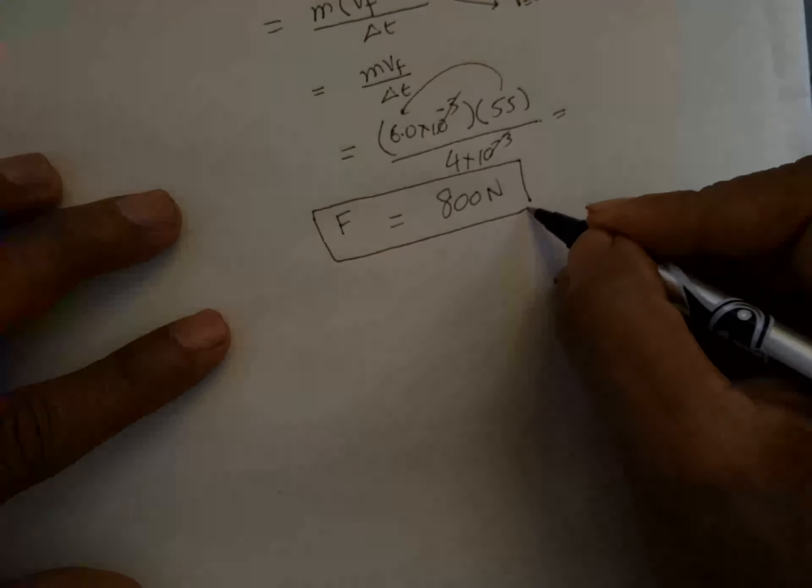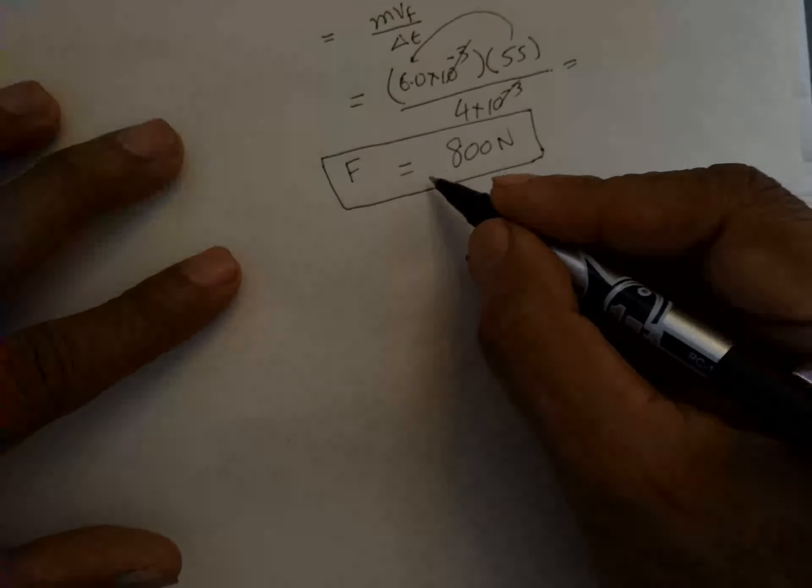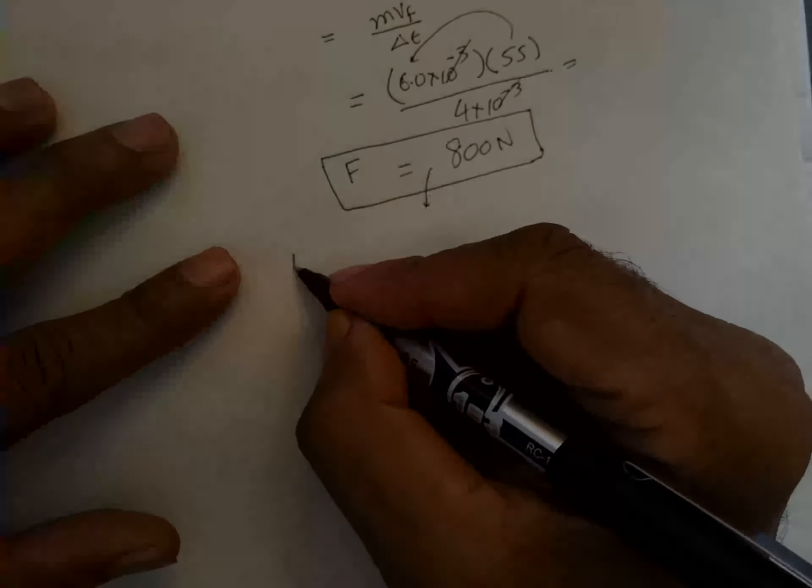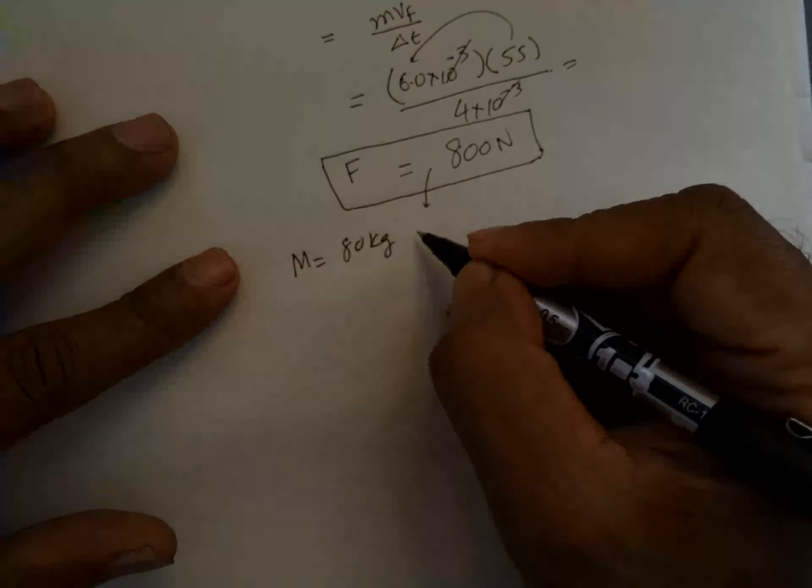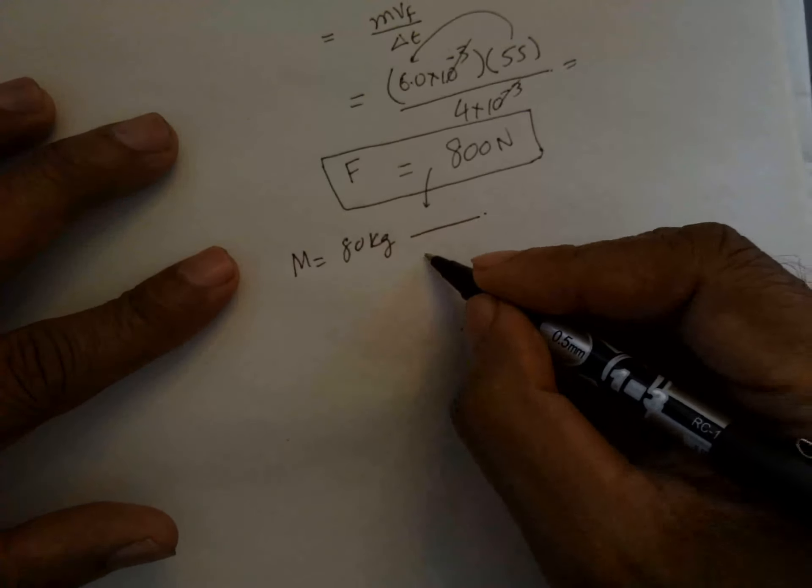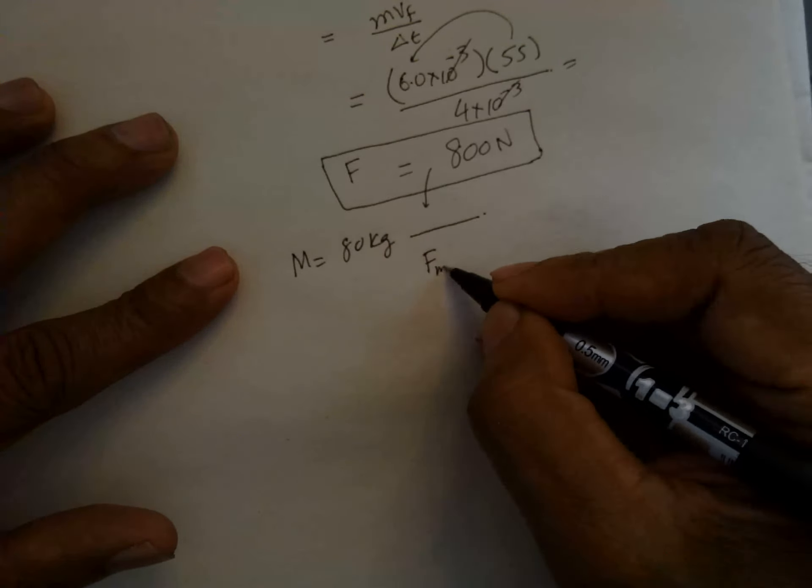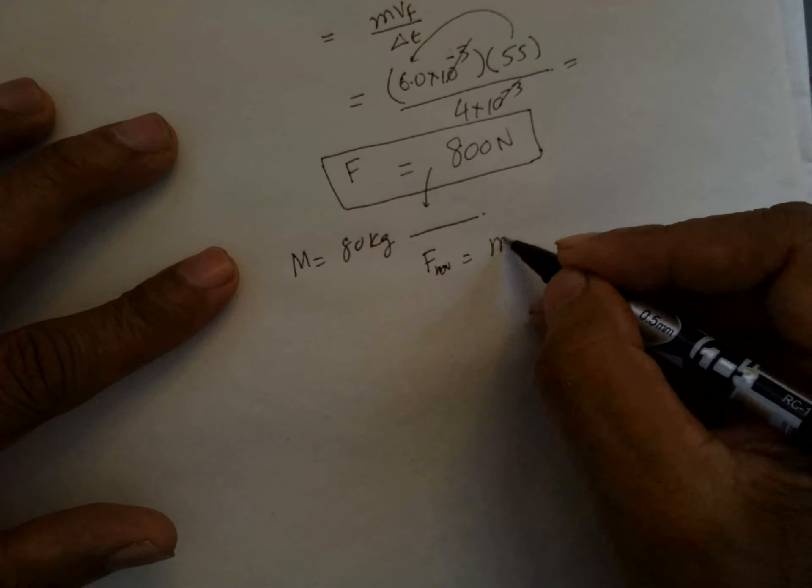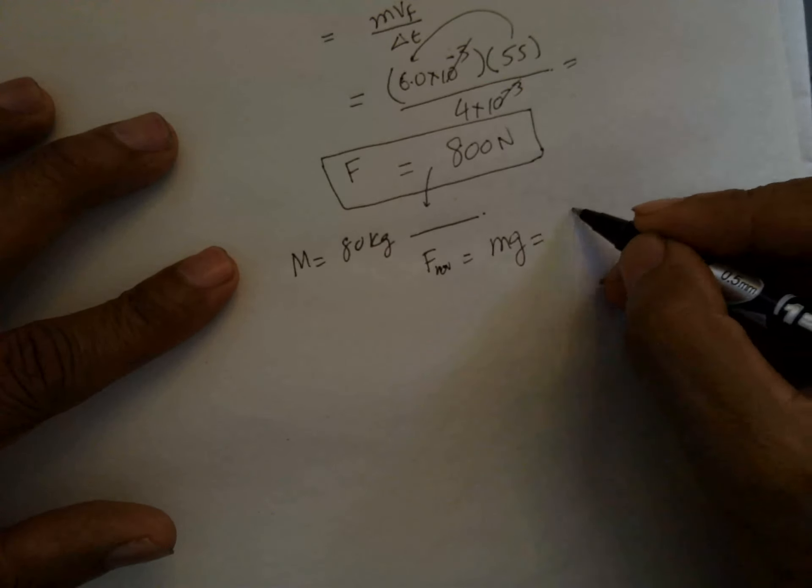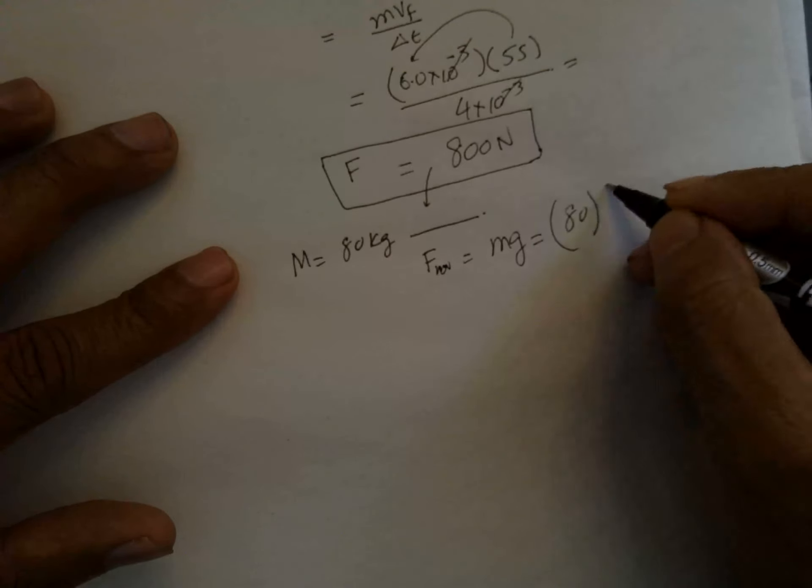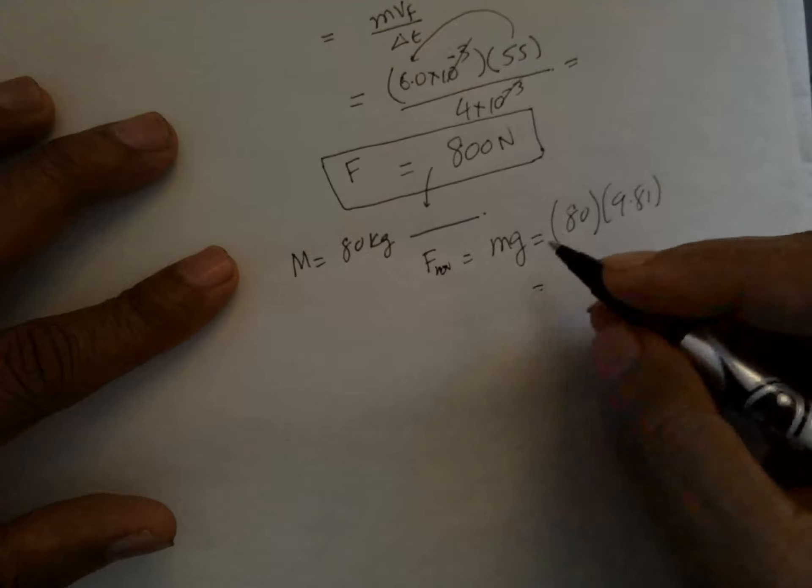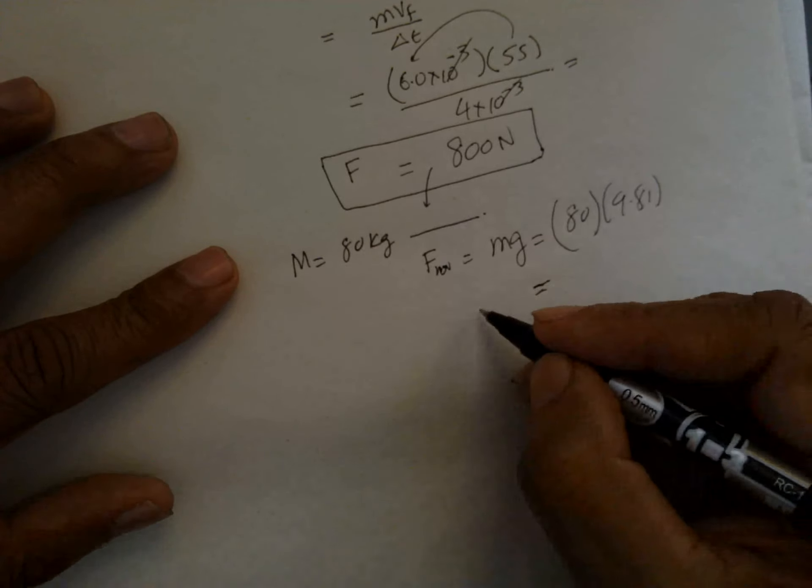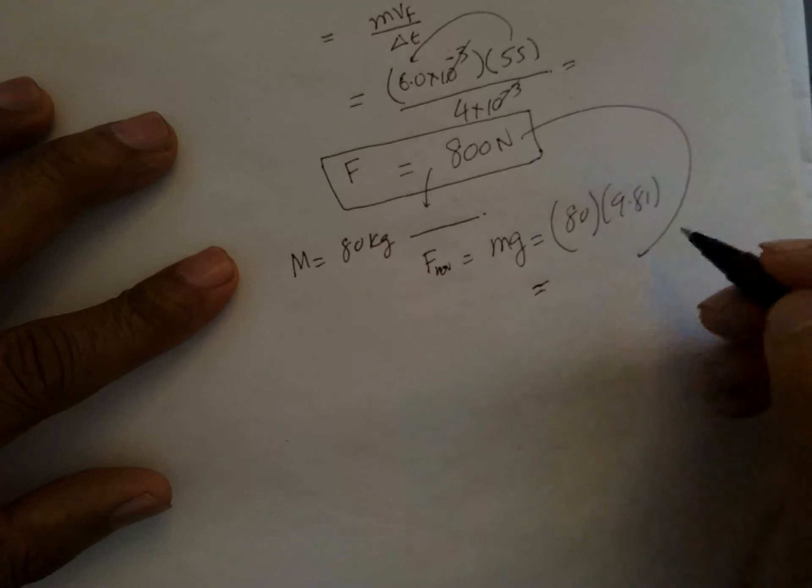And this force - if a man's mass is about 80 kg, the weight is equal to 80 times 9.81. If it is 10, this force is enough to...